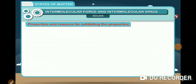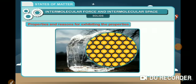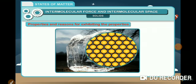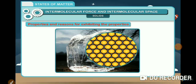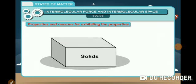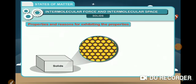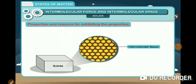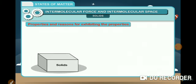Properties and reasons for exhibiting the properties. One, solids have a definite shape and occupy a definite space, that is solids have a fixed volume. Reason, since molecules are closely packed in a solid, they have least intermolecular space and strong intermolecular force of attraction. They cannot move from their place, giving solids a definite shape and volume.